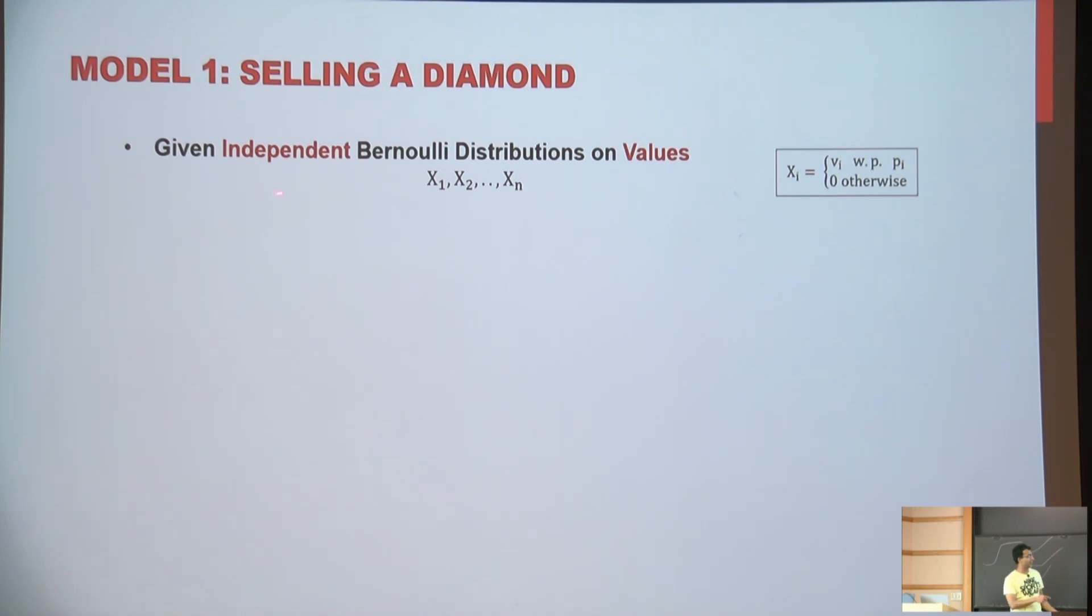So what do I mean by diamond selling in the stochastic setting? So again, you have these bunch of buyers. Let's assume I know distributions. These are independent distributions on their values. So buyer i, and for simplicity, I'll also assume these distributions are Bernoulli, which means buyer i either they like your diamond, and they're going to pay you vi. So these vi's are known upfront, and you also know pi's. With probability pi, they're going to like your diamond, and they're going to give you vi. They'll be willing to give you vi. Otherwise, they don't like it. And they'll be giving you value zero. So this is just for simplicity, but let's just work with Bernoulli distributions.